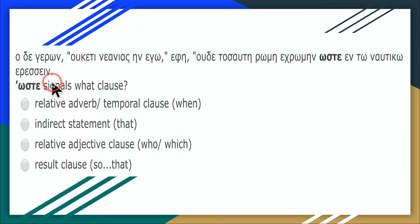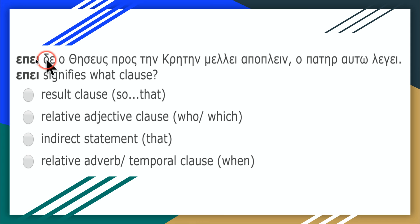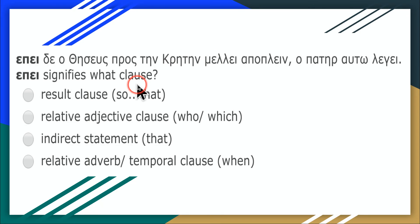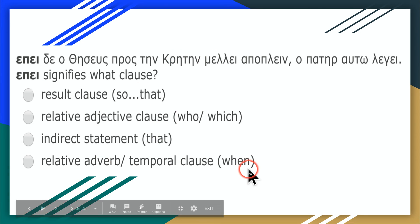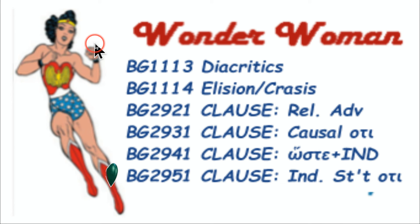Hoste plus the infinitive — so therefore it's a complement clause, also called a result clause: 'so that,' always with 'hoste.' 'Epei' deals with 'when Theseus desires to go to Crete' — so we're dealing with a relative adverb clause meaning 'when.' Well, that takes care of this tutorial. Watch the slideshow if you need to double check, and good luck.